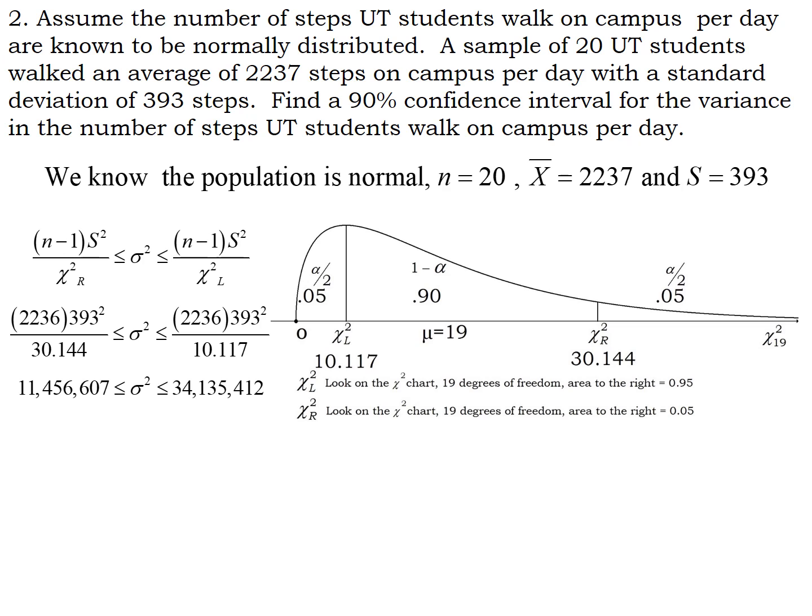When we multiply everything out, we end up with two large numbers. This makes sense because in our sample the number of steps varied significantly from student to student — the standard deviation was 393 steps. Our variance is the average squared distance from the mean, not just the average distance, so when you take a number like 393 and square it, it becomes enormous quickly. You can write the result as an interval if you prefer, but typically we write it as an inequality.